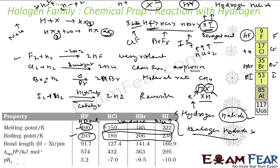HF is special — it has anomalously high melting and boiling points because of hydrogen bonding. Apart from fluorine, the rest follow the normal trend: as we go down the group, molecular size increases, Van der Waals forces increase, and boiling point increases. HF is actually a liquid at NTP while the other hydrogen halides are gases.